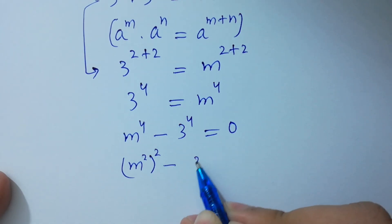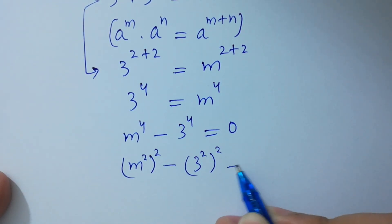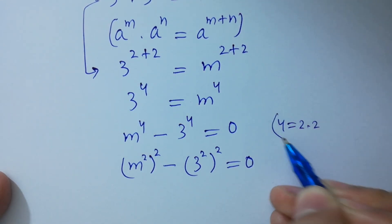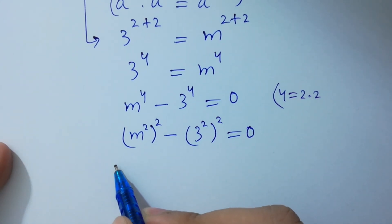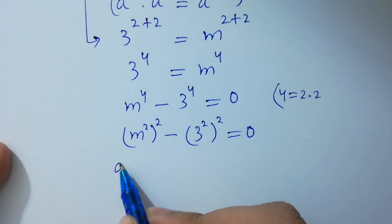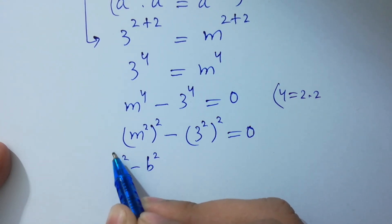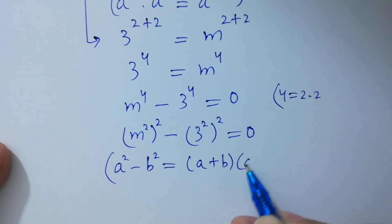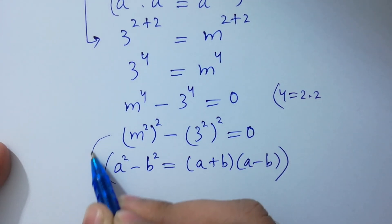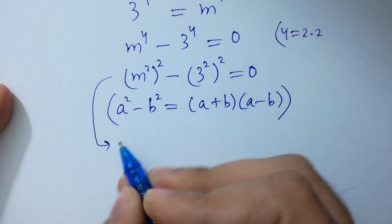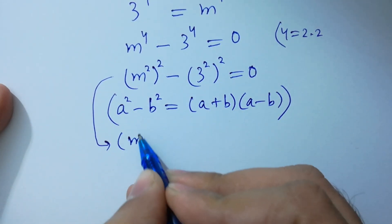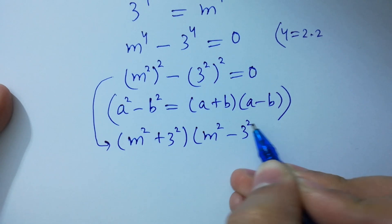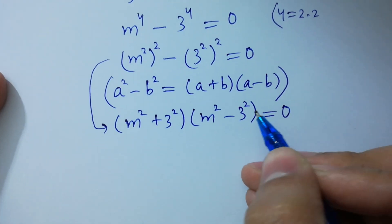Since 4 equals 2 times 2, we can write this as (m squared) squared minus (3 squared) squared equals 0. Using the identity a squared minus b squared equals (a plus b)(a minus b), we have (m squared plus 3 squared)(m squared minus 3 squared) equals 0.